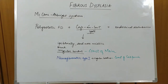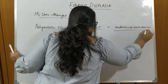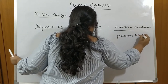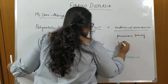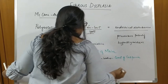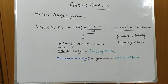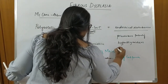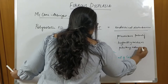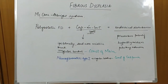Moving on to the endocrine disturbances in McCune-Albright syndrome. These endocrine disturbances are due to hyperactivity of endocrine cells and can manifest as precocious puberty especially in females, hyperthyroidism, or pituitary adenoma — a benign tumor of the pituitary gland.